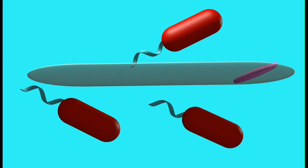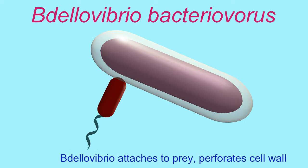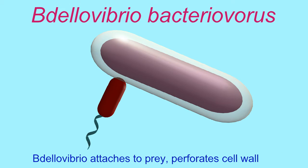In the first phase, the attack phase, it seeks out a prey bacterium, attaches to its membrane, and then breaks through the cell wall, which then kills its prey.